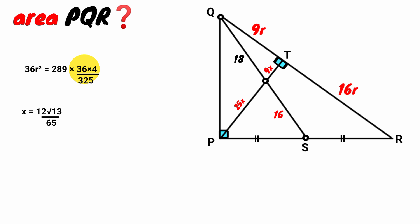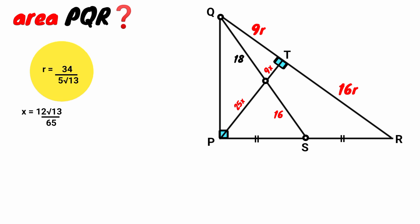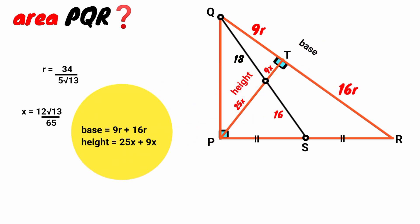Since 144 equals 36 times 4 and 36r squared equals 289x squared, substituting gives r squared equals 289 times 4 over 325. Taking the square root: r equals 17 times 2 over 5 root 13, which is 34 over 5 root 13. Now back to this triangle: taking this side as the base, the base equals 9r plus 16r, which is 25r, and the height equals 25x plus 9x, which is 34x.